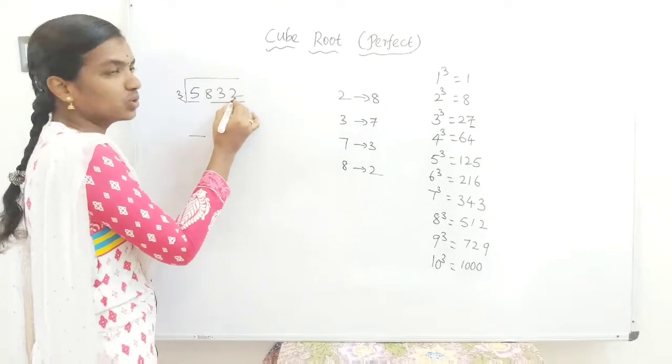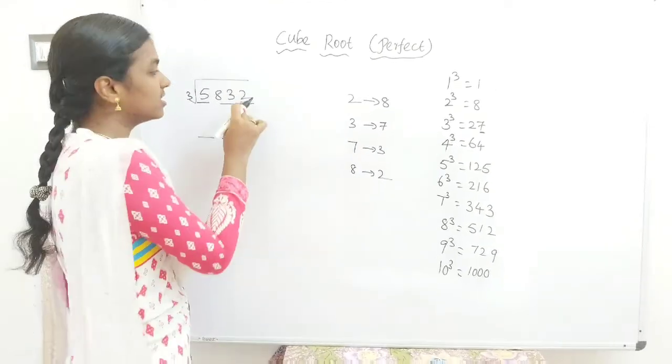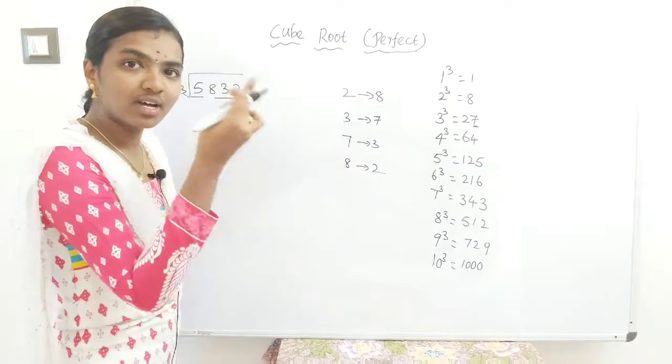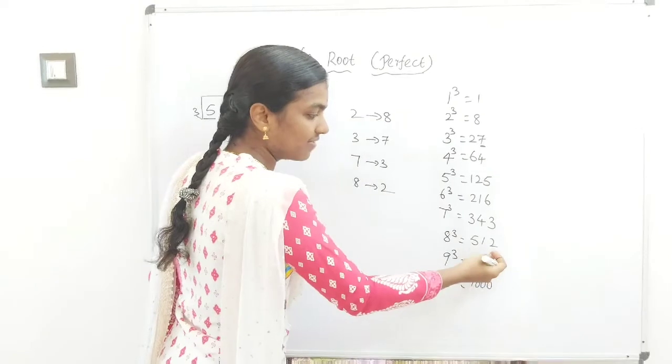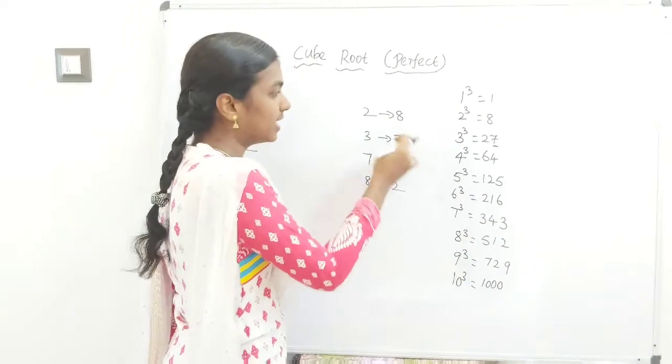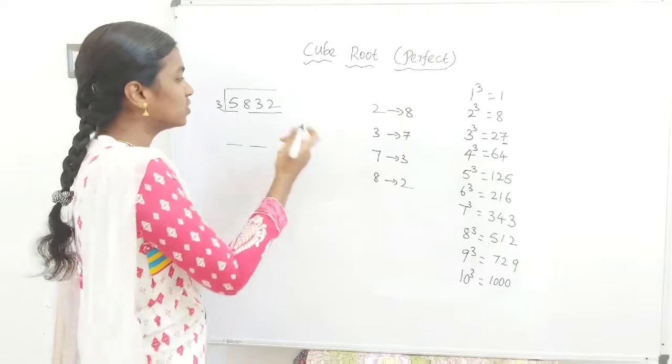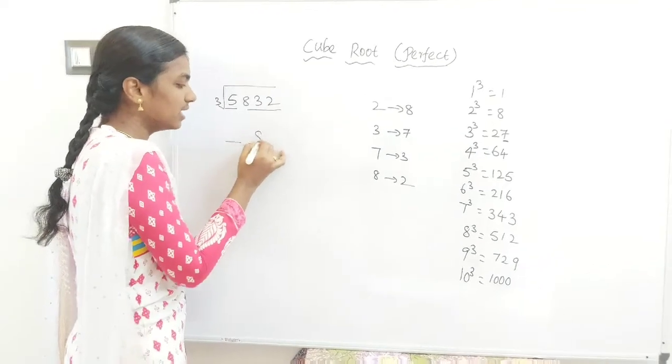The unit digit is 2. I said if the last digit is 2, the cube root's last digit is 8. Which number has last digit 2? It's 8. 2 means 8, 8 means 2. So our answer ends in 8.